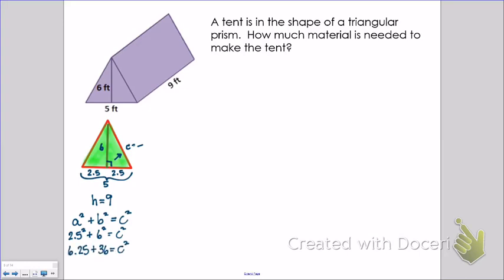When I substitute those numbers in, 2.5 squared is 6.25, 6 squared is 36, and then I'm going to add them together, I get 42.25. When I take the square root of 42.25, I get 6.5 as my missing side.